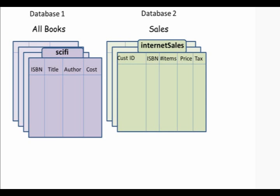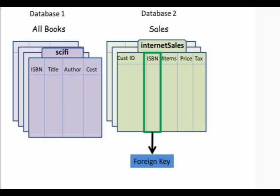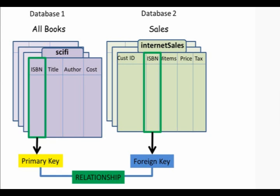For example, the Internet Sales table may include a list of books sold at my store. The table includes customer ID, ISBN, and price. In this table, the ISBN is a foreign key that joins the Internet Sales table with the Sci-Fi table. In the Sci-Fi table, ISBN is a unique primary key column. There is one ISBN for each science fiction book that I sell.